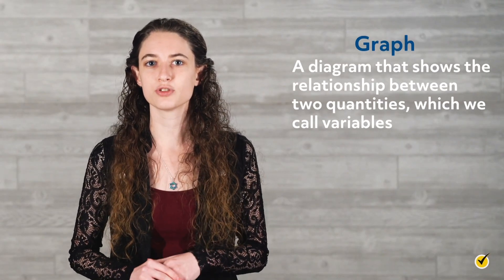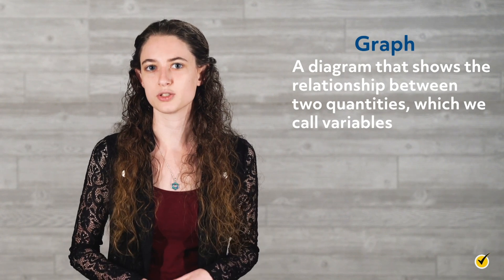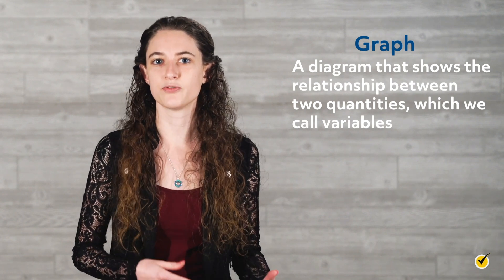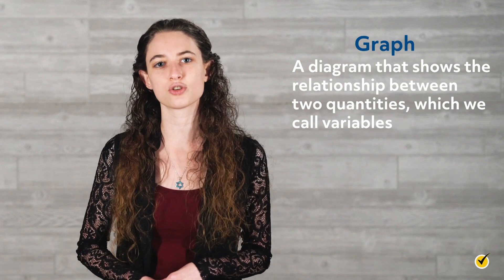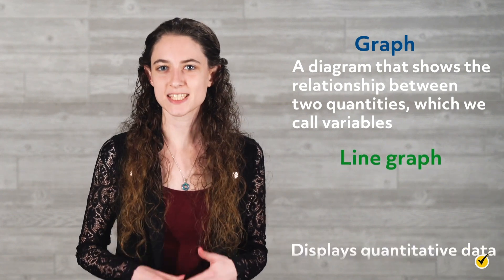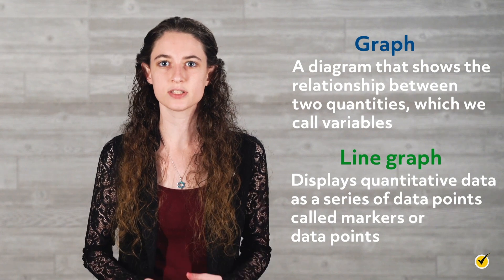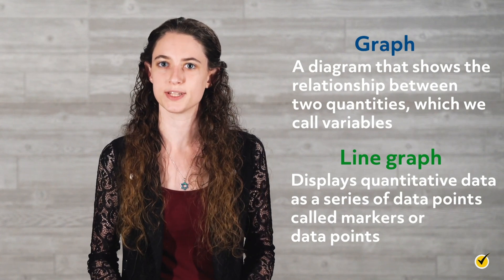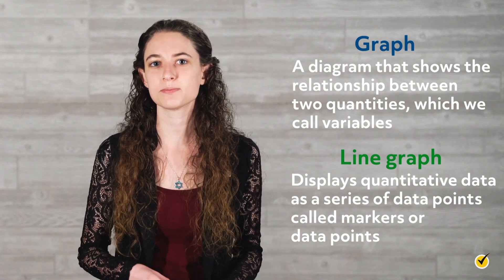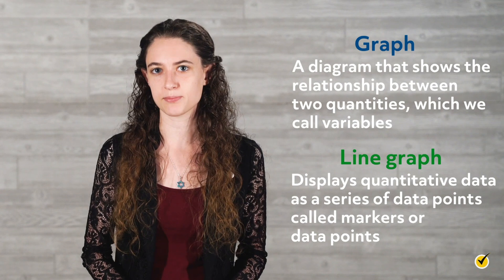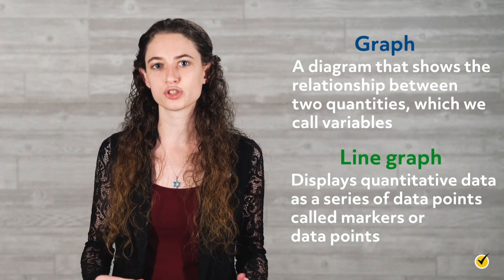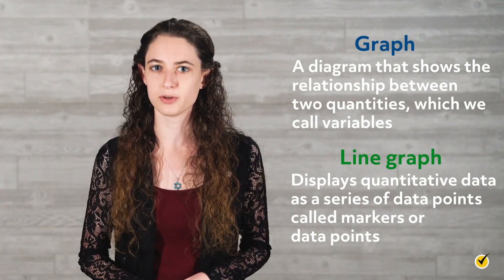Before we get started, let's review a few things. First, a graph is a diagram that shows the relationship between two quantities, which we call variables. These variables are measured along the x-axis and y-axis on a coordinate plane. A line graph is a type of graph that displays quantitative data as a series of points called markers, or data points. These data points are connected by straight line segments, showing the relationship between two variables.